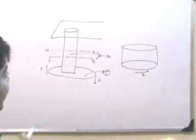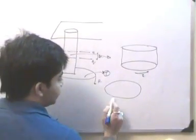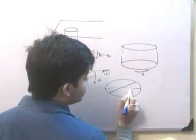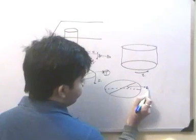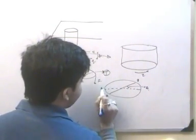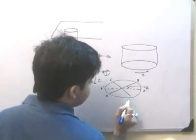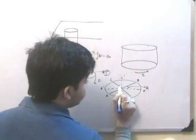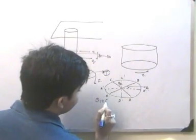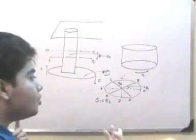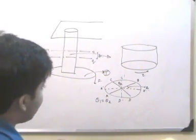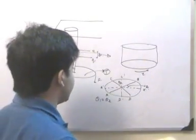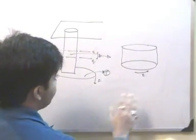The circular cross-section will remain circular. If diameter AB changes to A'B' by an angle theta1, and another diameter CD changes to C'D' by angle theta2, then theta1 equals theta2. This means every diameter undergoes the same change of angle, so the circular cross-section remains circular. This is one important observation.